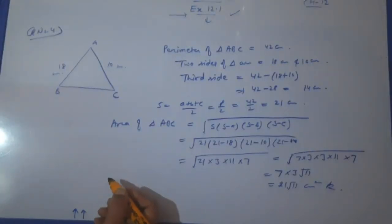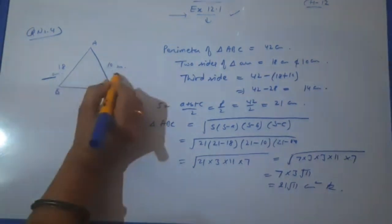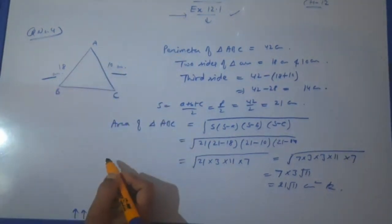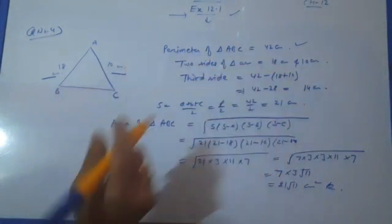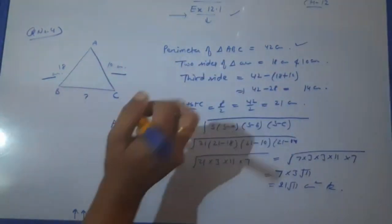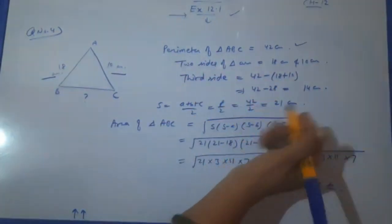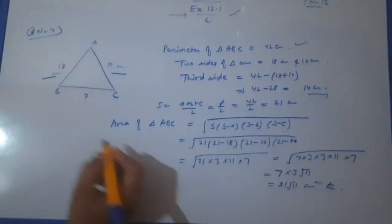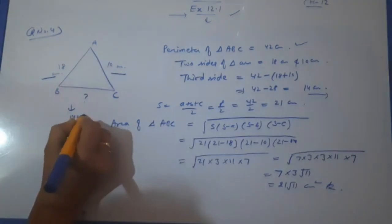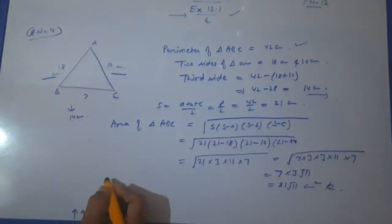Yes 9th class, let us do question number 4 of exercise 12.1. Find the area of the triangle, two sides of which are 18 centimeter and 10 centimeter. The perimeter is 42 centimeter. We are given the perimeter. Third side is missing. So from the perimeter, if we minus these two sides, we will get the third side. That will be 14 centimeter. And we have to find the area of this triangle.